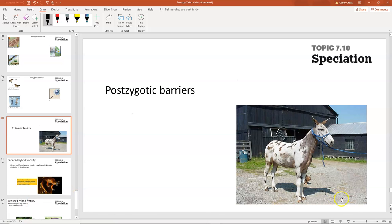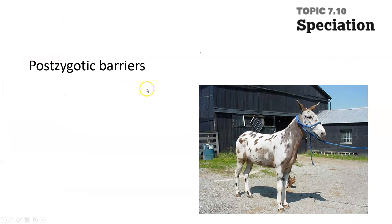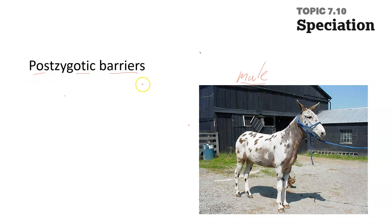Okay, welcome back. We are on topic 7.10, speciation. We are talking about post-zygotic barriers now — we talked about pre-zygotic barriers in the last video. I have a picture here of a mule. Before we begin, write down a little paragraph describing why you think I have a picture of a mule here when I talk about post-zygotic barriers, which results in speciation. Write that down, then pause the video and we'll get back to it.